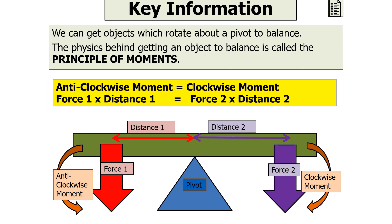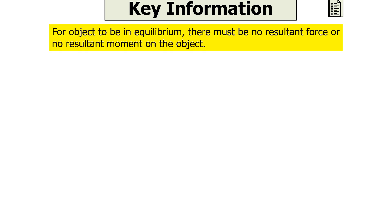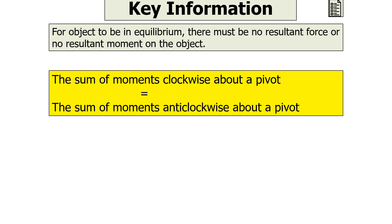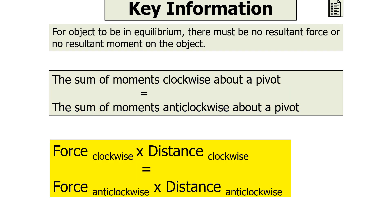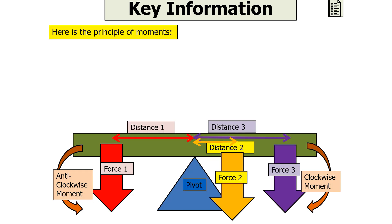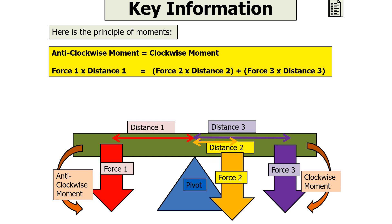We know that moment is force times by distance. For an object to be in equilibrium, force 1 times by distance 1 equals force 2 times by distance 2. So the sum of the moments clockwise about a pivot equals the sum of the moments anticlockwise about a pivot. Here we can see the principle of moments: the anticlockwise moment equals the clockwise moment, or force 1 times distance 1 equals force 2 times distance 2 plus force 3 times distance 3.